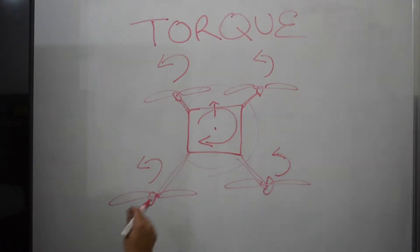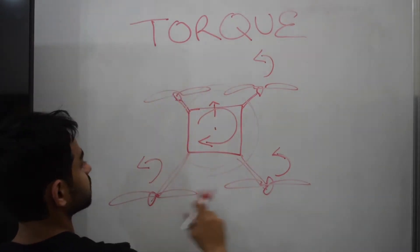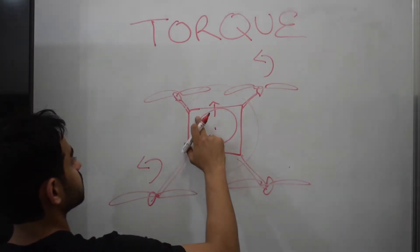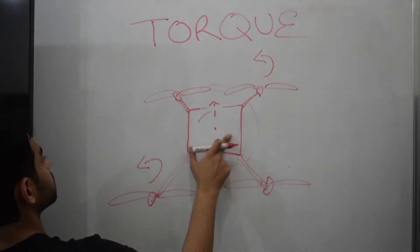Hence, to balance the torque out for stability, rotors 3 and 4 rotate in the opposite direction.